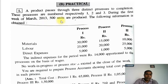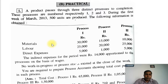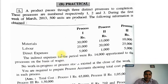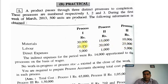Now, how do we apportion the indirect expenses of 14,000? We distribute the 14,000 to each process on the basis of wages — that is, on the basis of labor — so we will distribute accordingly.